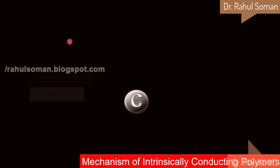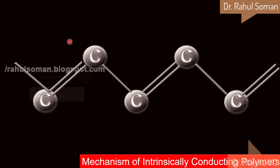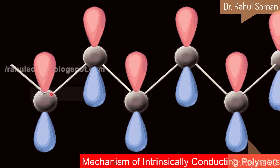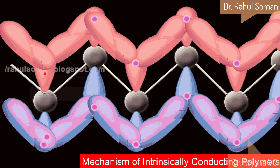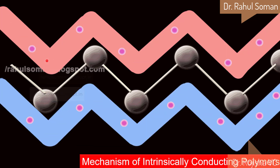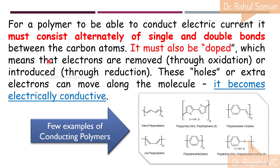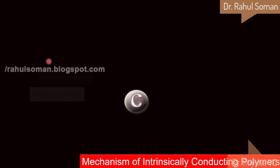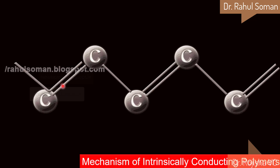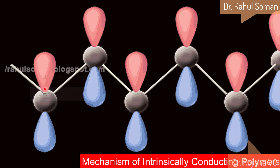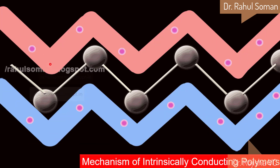The mechanism of conductivity in intrinsically conducting polymers can be seen in polyacetylene, which has alternating double and single bonds. The p orbitals undergo hybridization with each other, and that hybridization leads to an easy passage of electrons through the hybridized orbitals — that is how the polymer becomes conducting. However, this hybridization alone is not sufficient for exact conductance behavior in polyacetylene.